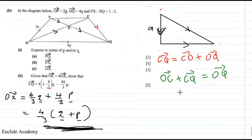So OC plus CQ should give me OQ. Now, the question you have to ask ourselves, we can even use this one if you want, but probably in this situation it would be best to use this one because we already have OC there.